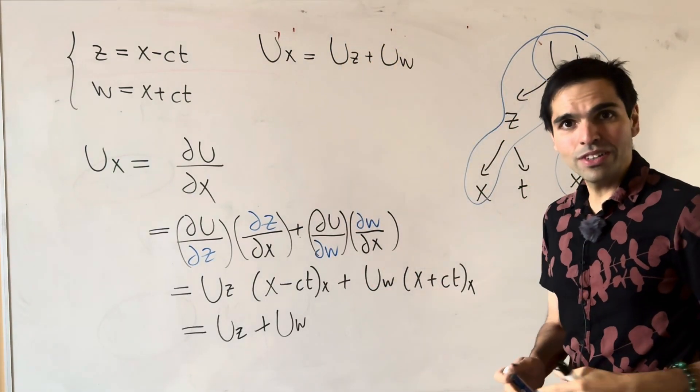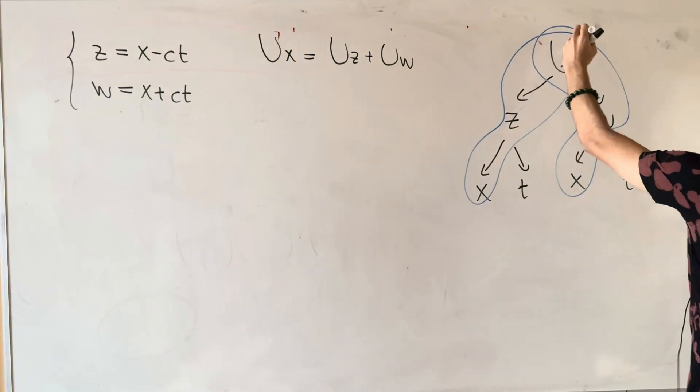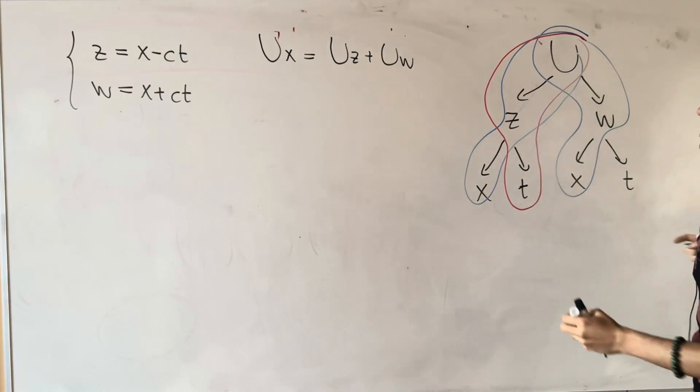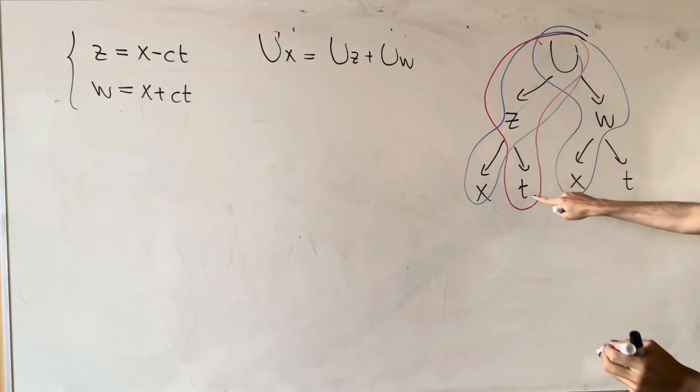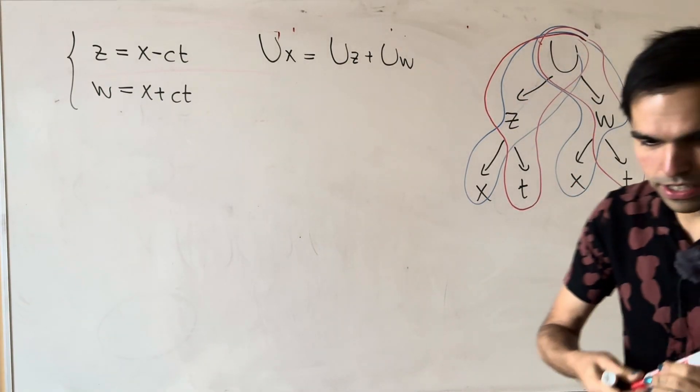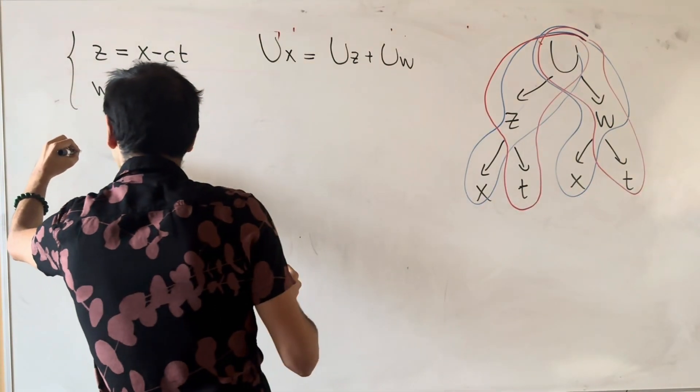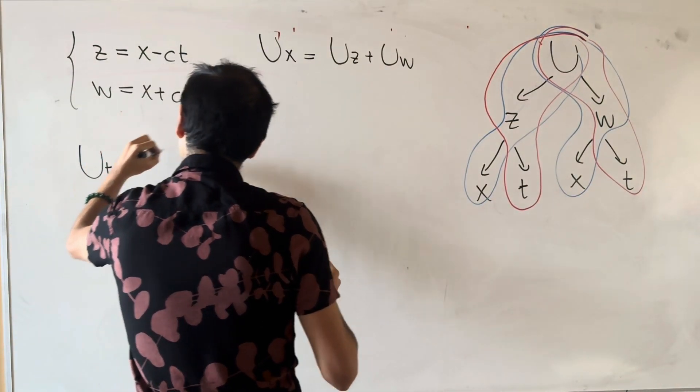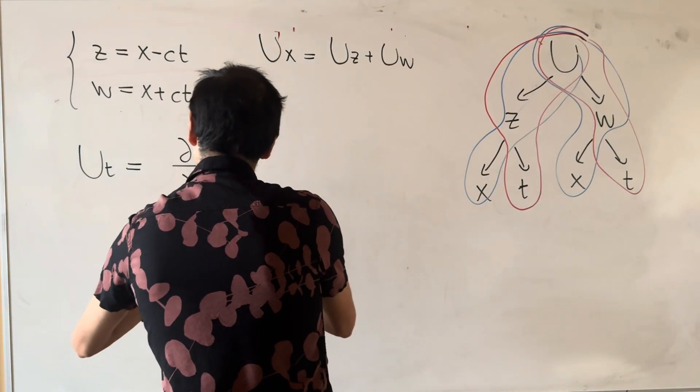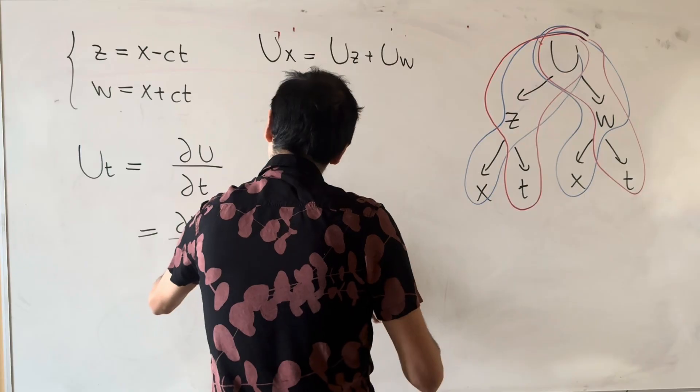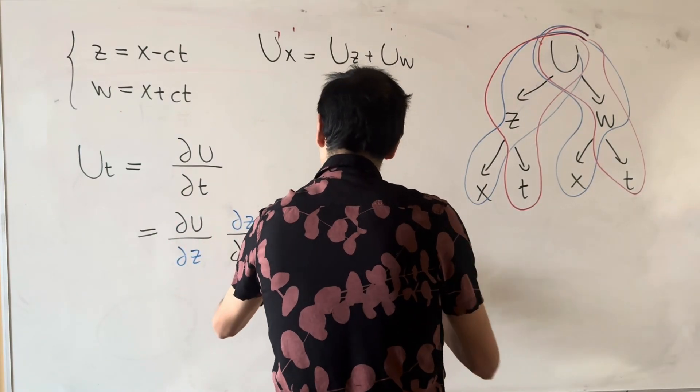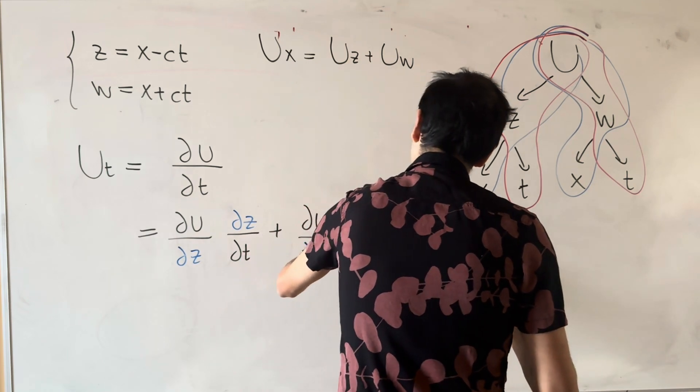And what we want to do now, we want to calculate U_t. Here, you follow the other chain. So it's du over dz times dz over dt, and then du over dw times dw over dt. So let's do that now. So U_t is once again du over dt, and that becomes du over dz times dz over dt plus du over dw times dw over dt.